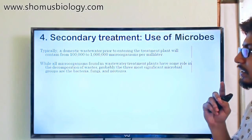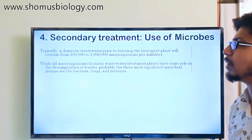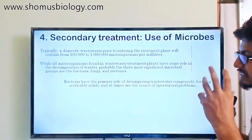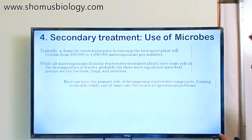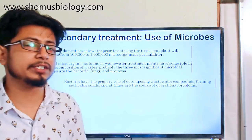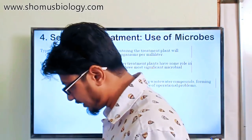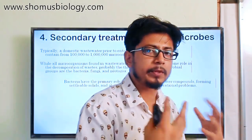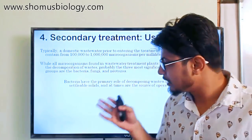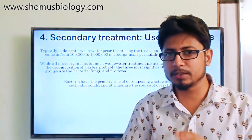The three most significant microorganisms in wastewater treatment plants are bacteria, fungi, and protozoa. Bacteria's primary role is decomposing wastewater compounds and forming settleable solids. Bacteria take up organic materials from the wastewater and convert them into settleable solids, which are no longer reactive and can settle to the bottom of the secondary clarifier tank.